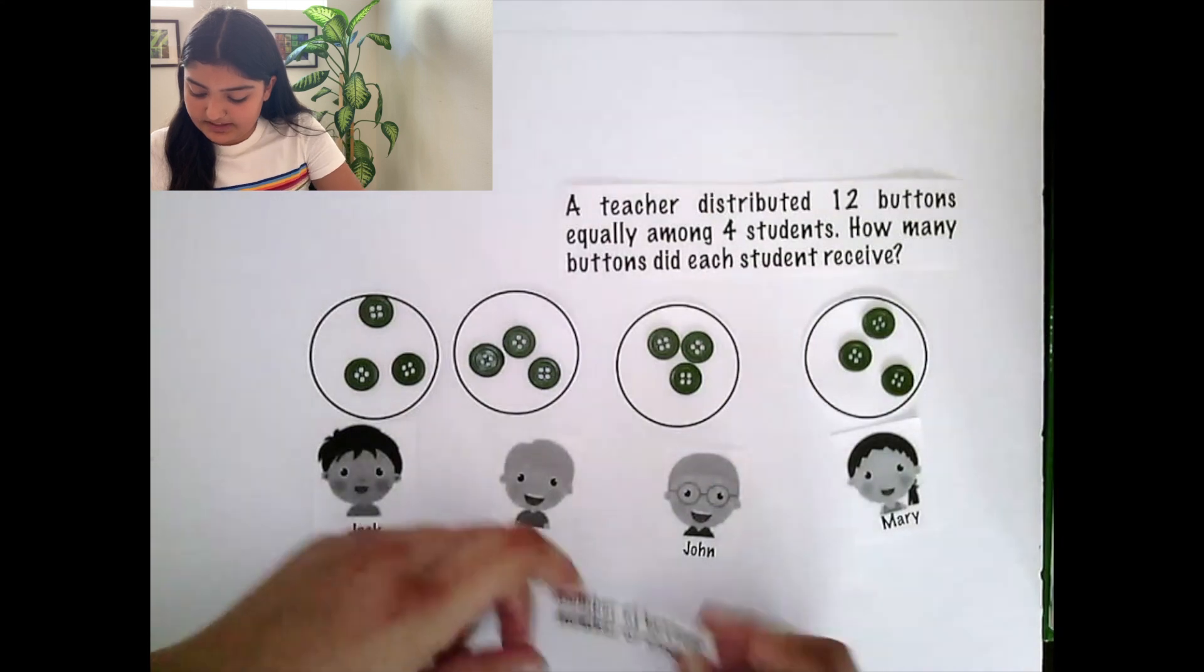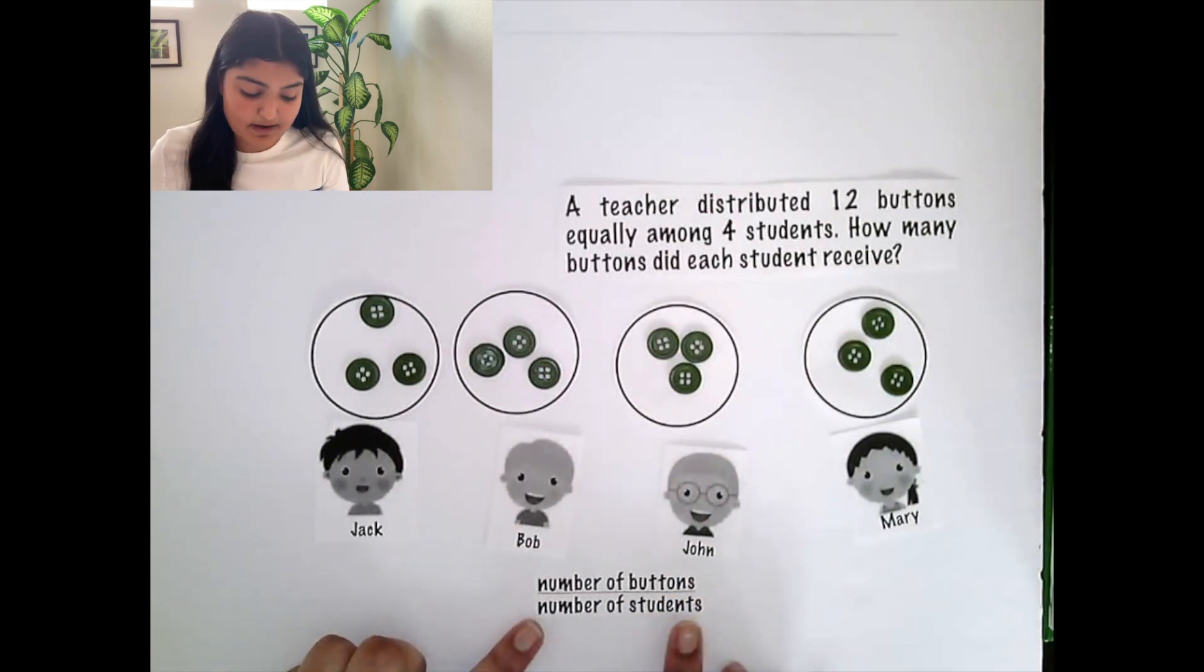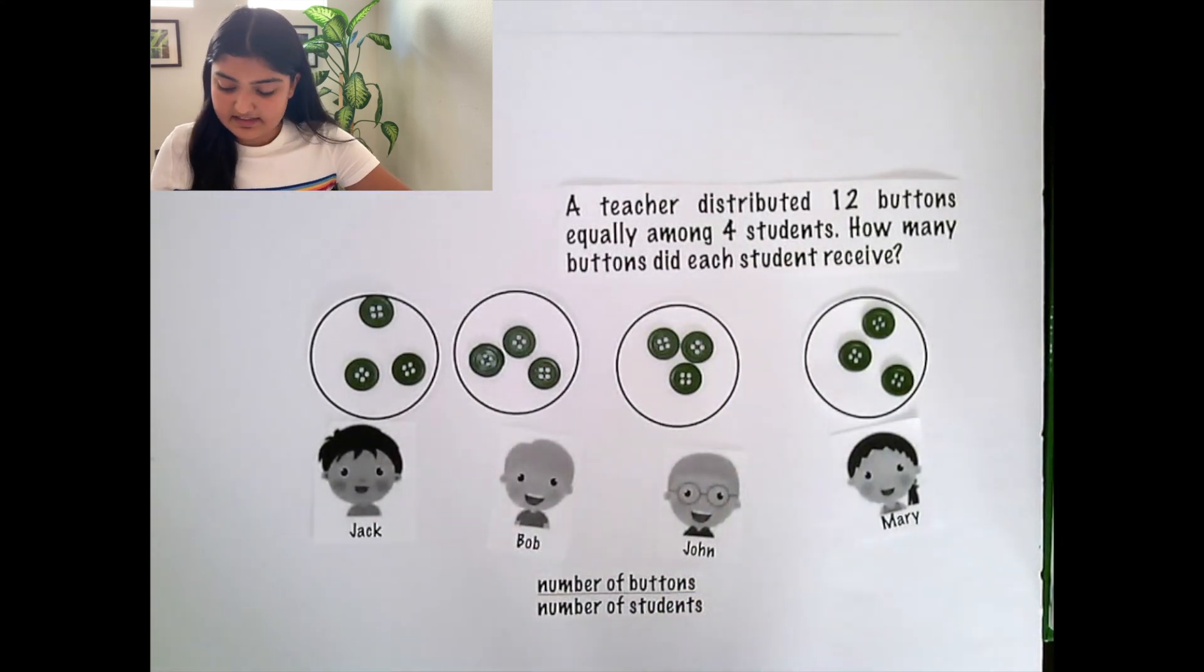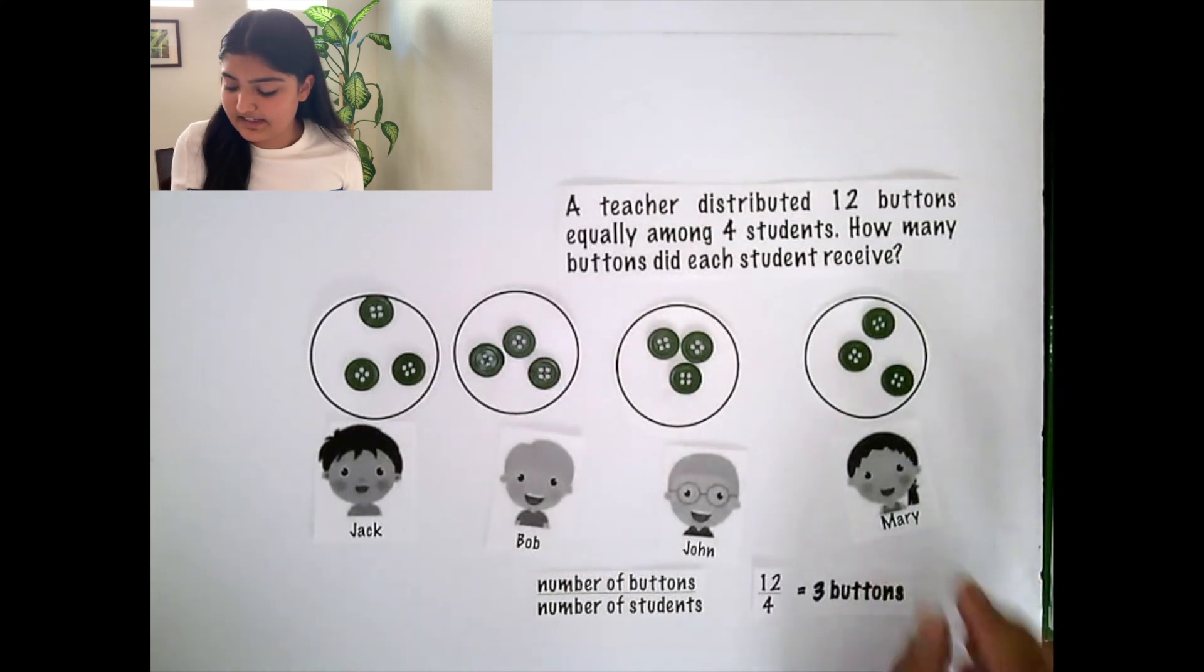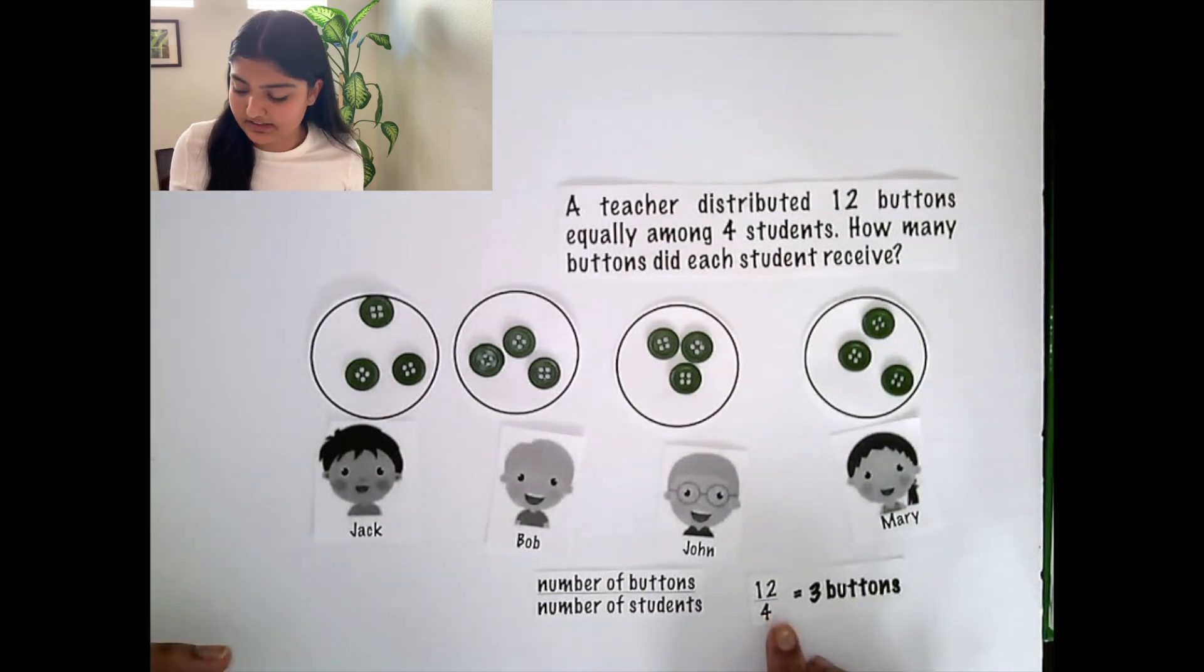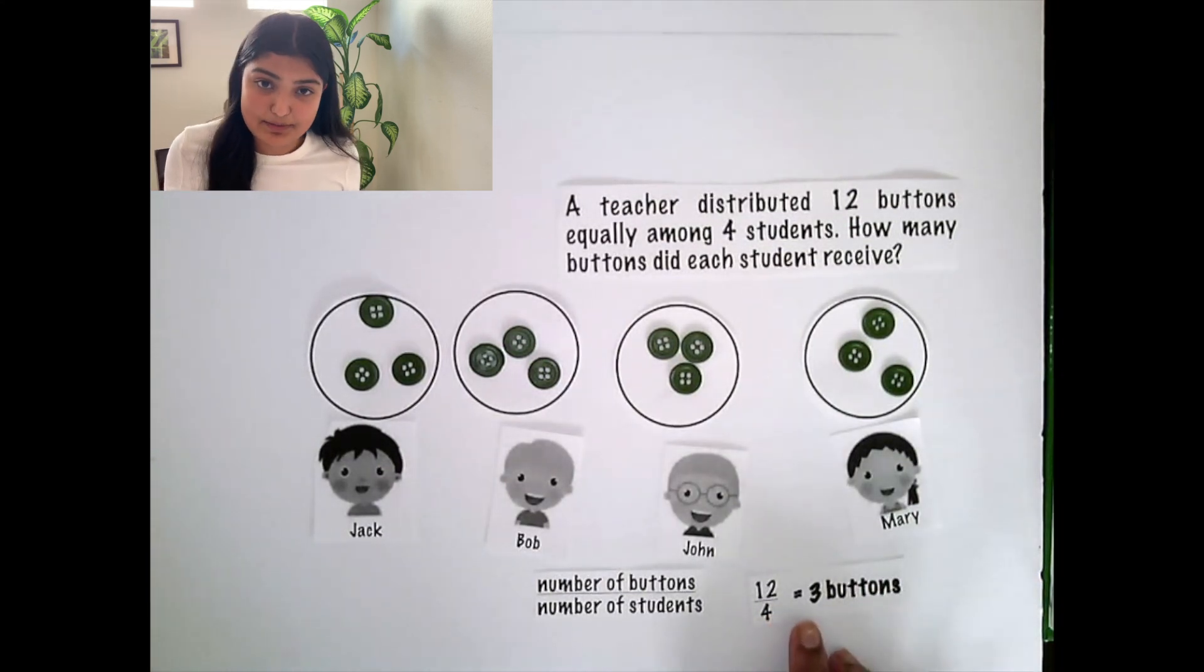To solve this question, we did the number of buttons divided by the number of students. In this case, there were 12 buttons and we divided it by 4, the number of students, for each student to have 3 buttons each.